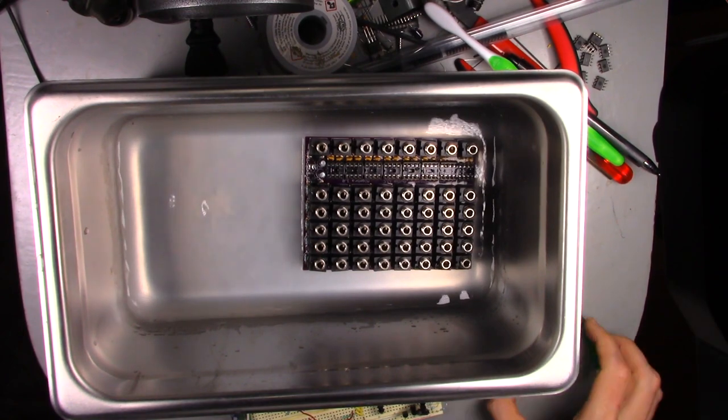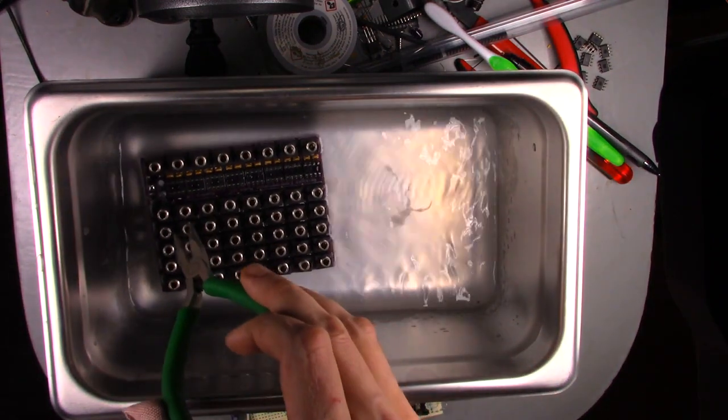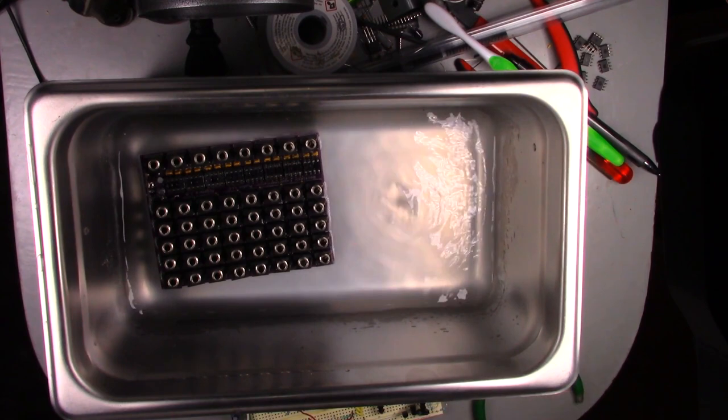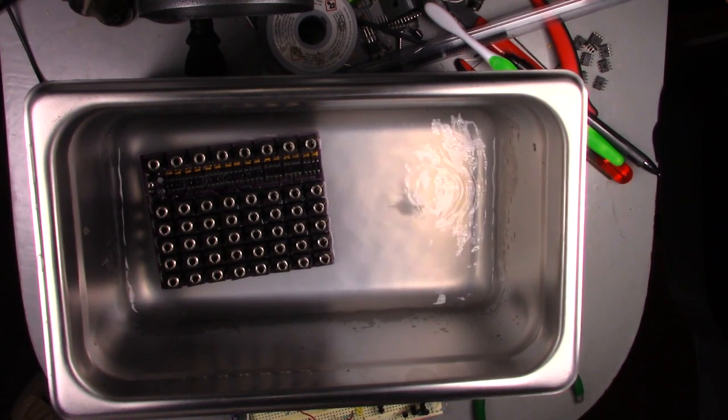After I feel it's had enough time, I take the PCB out and give it a look. If all the flux is gone, I rinse the PCB off in the sink. If there is still flux residue, I put the PCB back in for another few minutes. After rinsing, I just let the PCB air dry and it's ready to use.